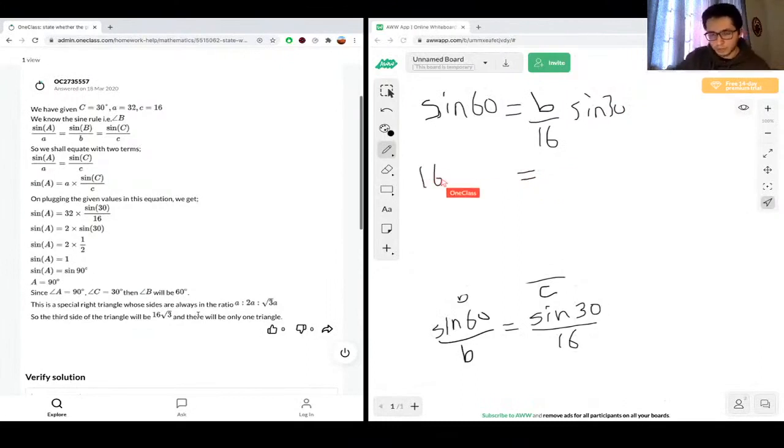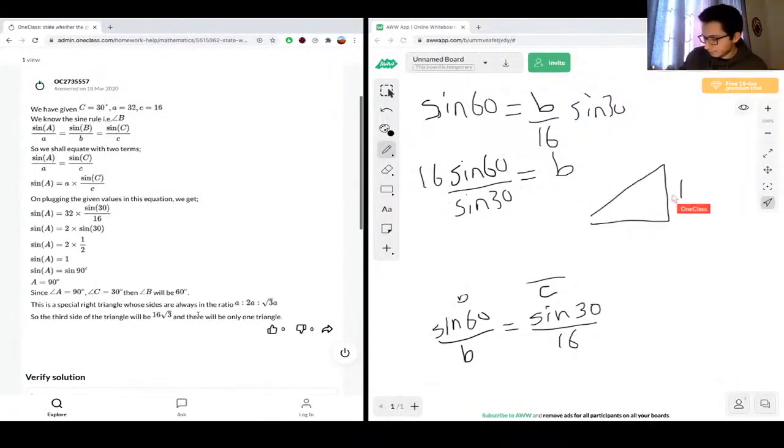So we have sine 60 still is equal to B over 16 times sine 30. And then we just have to move all that stuff to the other side, so we have 16. So we multiply both sides by 16, get rid of the 16, sine 60. And then divide both sides by sine 30, get rid of the sine 30. And then we just have B on the right side. So you can do this by plugging this into your calculator, or you can also use the special triangles. So we have here 1, 2, root 3 is the right angle. And then we have 30 and 60.